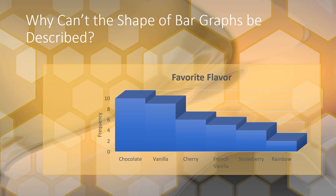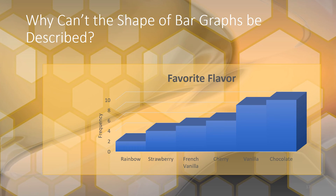Here's an even more telling example using a bar graph with nominal variables — categorical variables. We have ice cream flavors: chocolate, vanilla, cherry, french vanilla, strawberry, and rainbow, and how many people picked each as their favorite. Looking at this bar graph, you might say it's skewed to the right, but that's not accurate. The exact same data reordered looks skewed to the left. There's no inherent order for these categories — we could put rainbow first or chocolate first — and there are countless other orderings that would make the shape look totally different. So definitely do not describe the shape of bar graphs, only histograms.